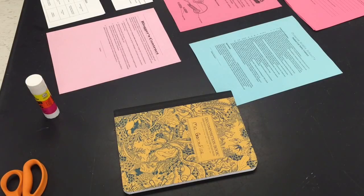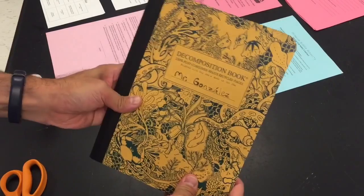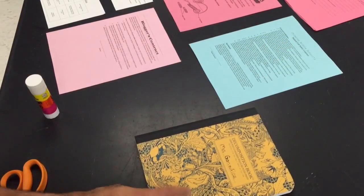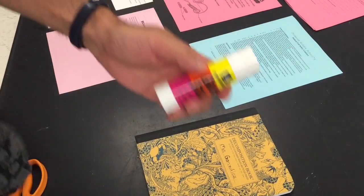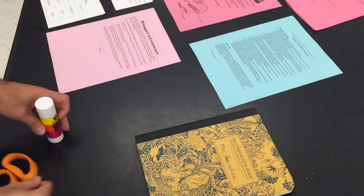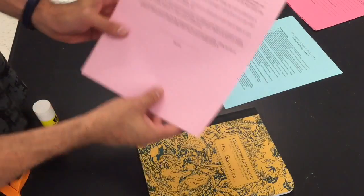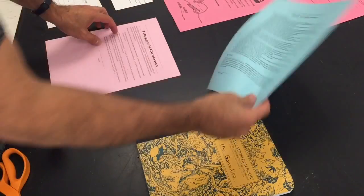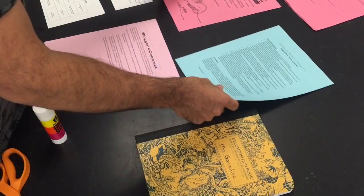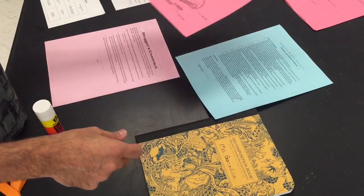So here's what you're gonna need to set up your notebook. First you're gonna need your composition notebook for science. You're gonna need a glue stick, scissors, your bloggers contract, your lab safety contract, your guidelines for scientific drawings.